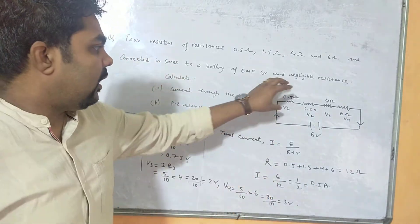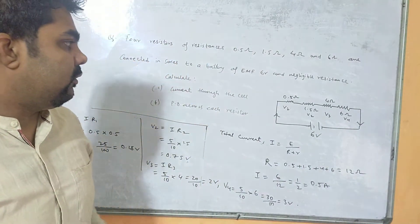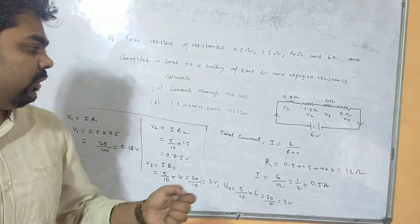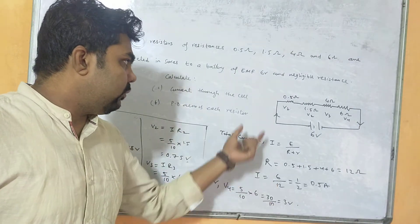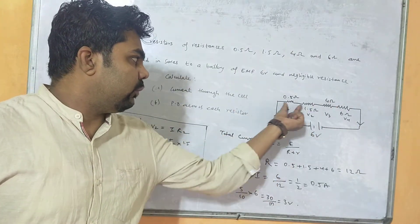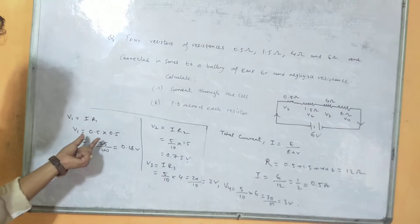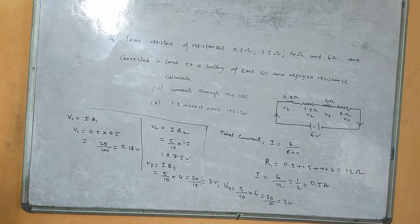This is how we calculate the potential drop across each resistor. First calculate the total current, then since all are in series, multiply each resistance by the current to get the potential drop across that particular resistor.